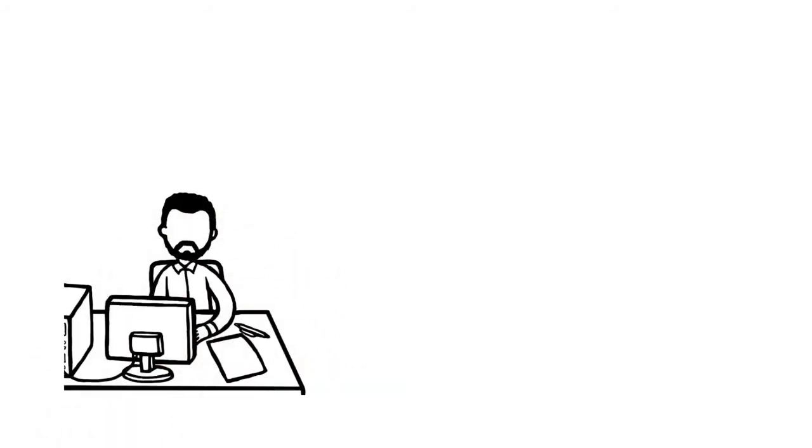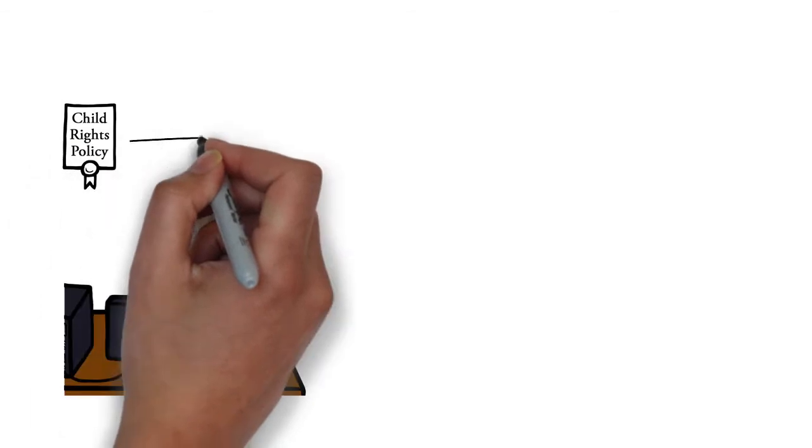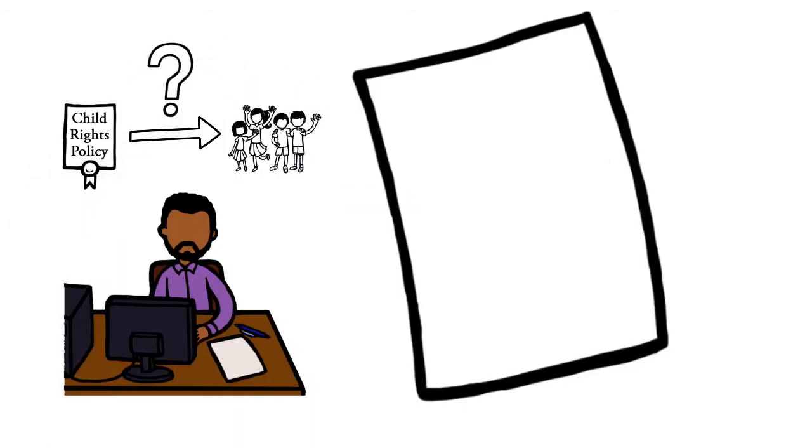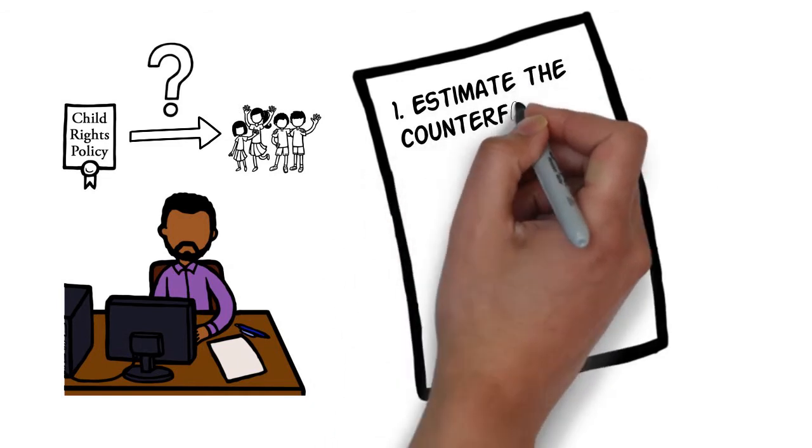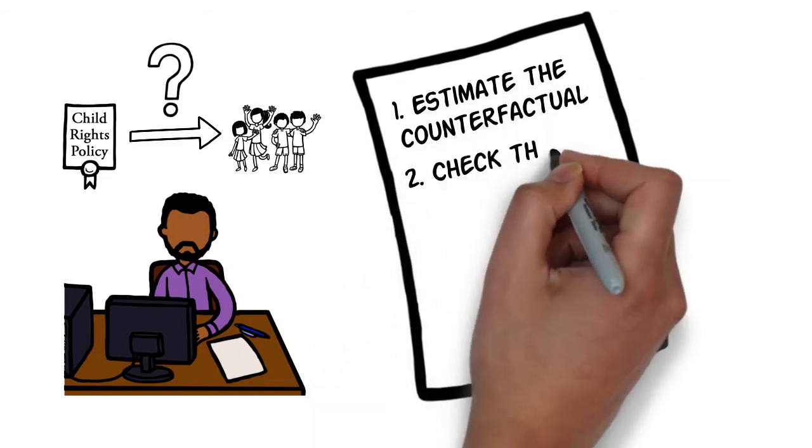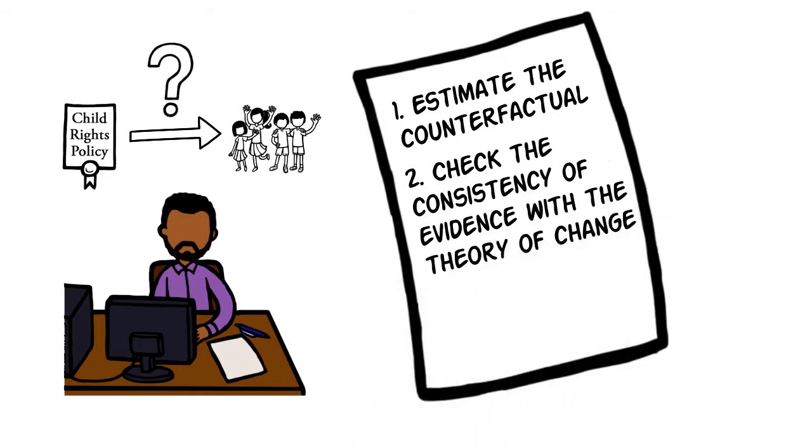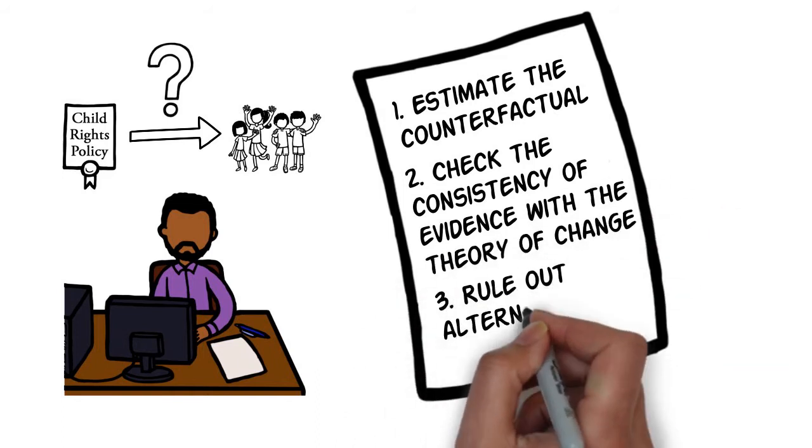There are three broad strategies that he can use to establish causal attribution in this impact evaluation. 1. Estimate the counterfactual. 2. Check the consistency of evidence with the theory of change. And 3. Rule out alternative explanations.